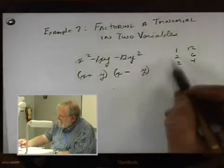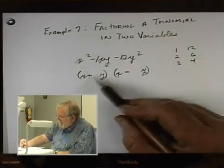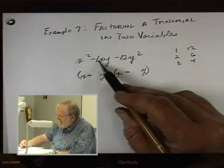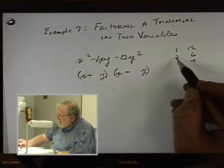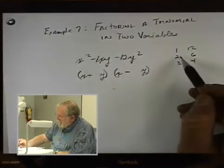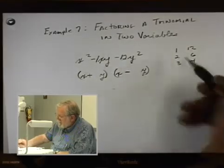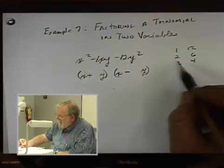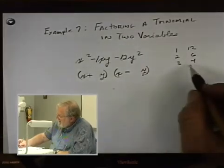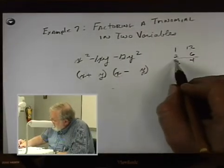So we're going to subtract because this is positive and negative. 1 from 12 is 11. That's not a 1. 2 from 6 is 4. That's not a 1. 3 from 4 is 1. So here's a 1. Now, we've got to figure out these are going to be our factors.